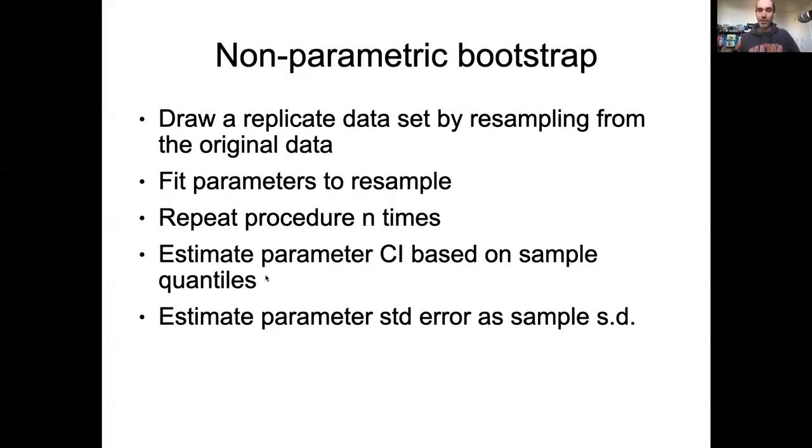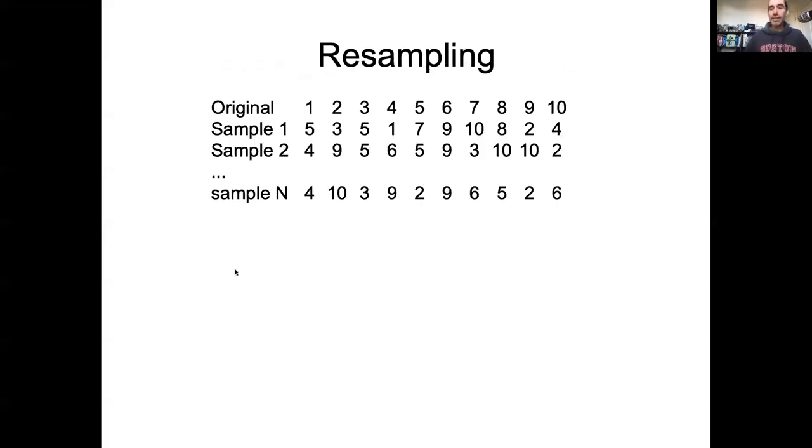So how does this work? And specifically, what do we mean by resampling? Here's a simple example. Imagine my original data was just the numbers 1 through 10, and I'm interested in fitting just a simple sample mean. The original mean was 5.5. Now let's say I asked a computer to randomly resample this data set. Importantly, we're doing what's called resampling with replacement.